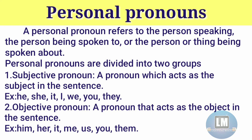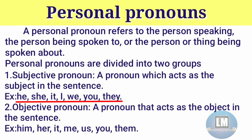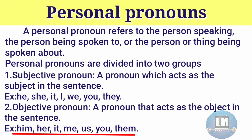A subjective pronoun is a pronoun which acts as the subject in the sentence. For example, he, she, it, I, we, you, they are used in subject place. An objective pronoun is a pronoun that acts as the object in the sentence. Him, her, it, me, us, you, them are used in objective place.